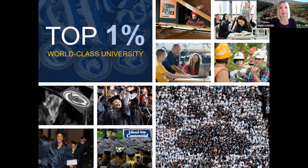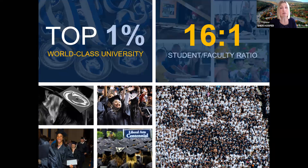Penn State is a world-class university with a student-faculty ratio of 16 to 1. At many Penn State campuses, the average class size is 25 to 30. Faculty know the students, call on them in class, and there's a lot of in-class interaction. At every Penn State campus, faculty are required to post office hours so students know when they're available in case there are questions.